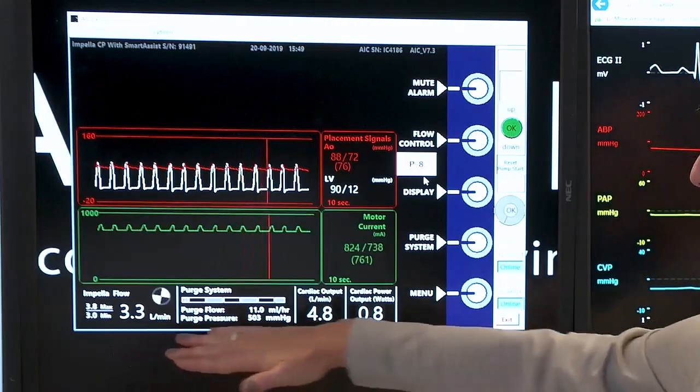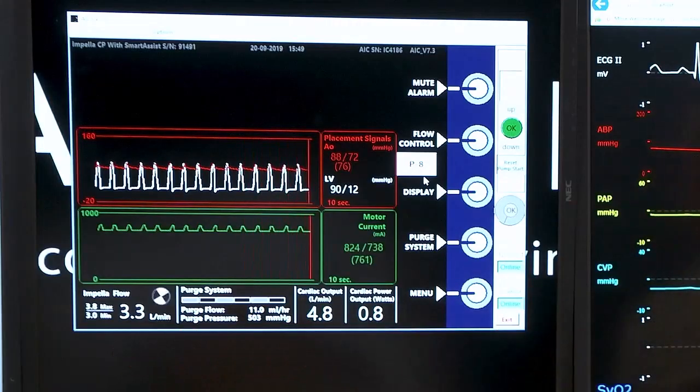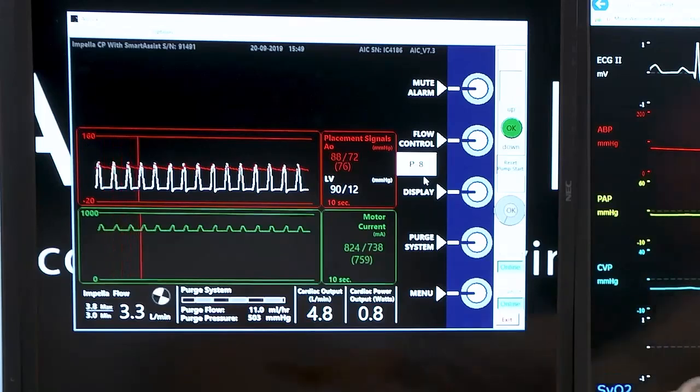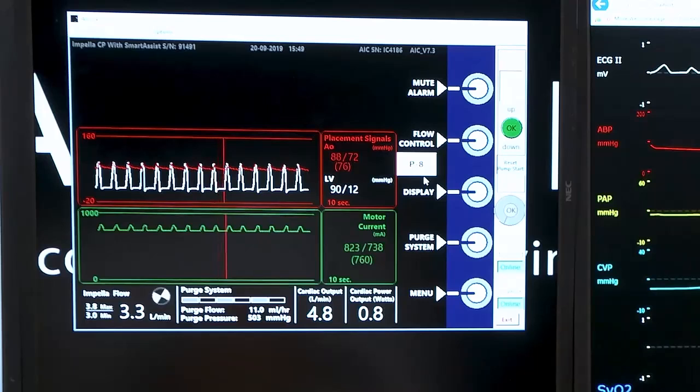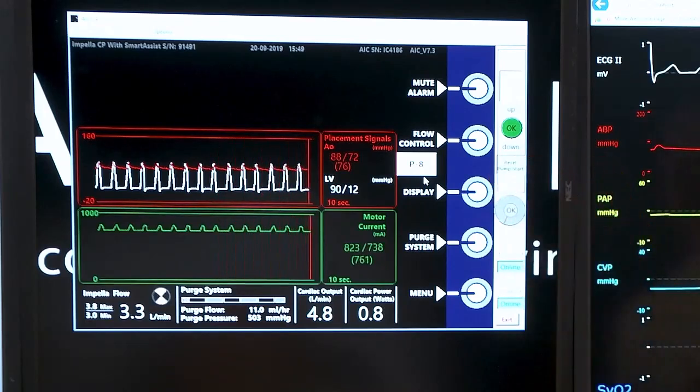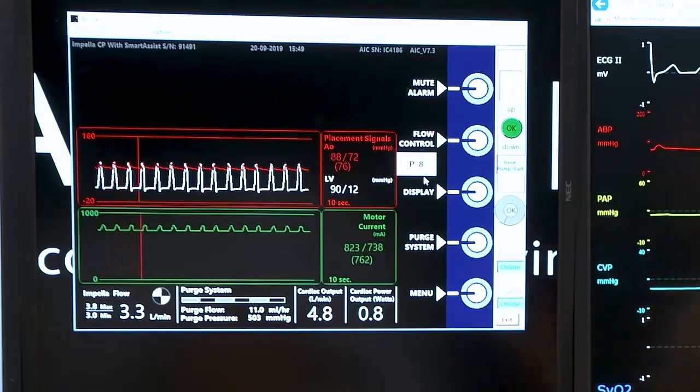When we look at the bottom of our screen here, you will see that over at the far left hand corner, it's going to give the additional amount of flow that we're giving the patient. Again, controlled by that flow control button or the P level that you're on.